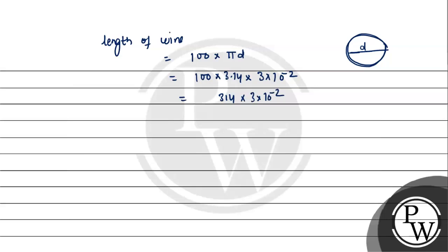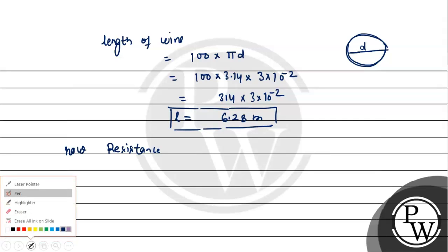Now we can calculate the resistance. We have R = ρL/A. The resistivity ρ is 4.2 × 10^-7.